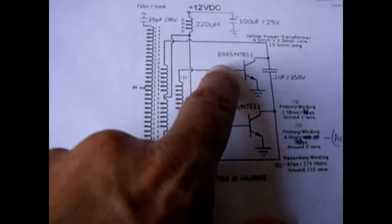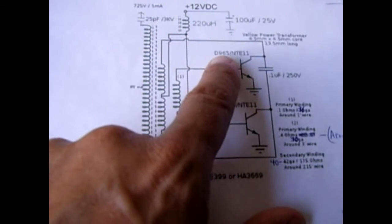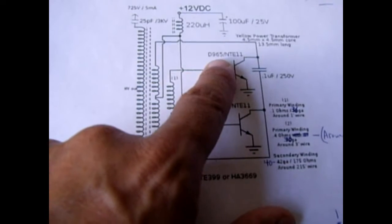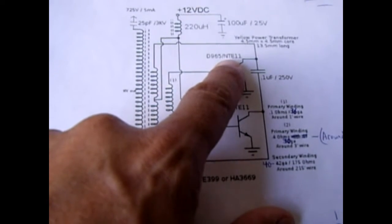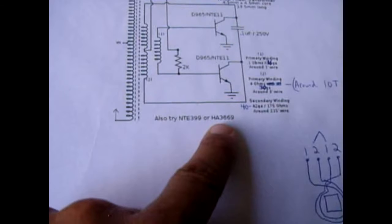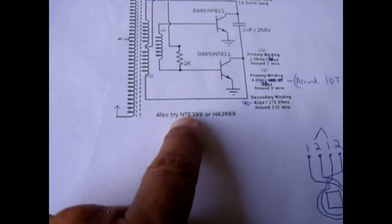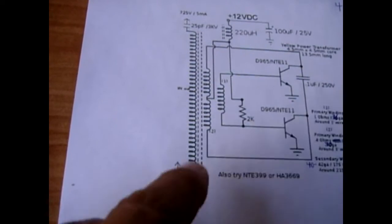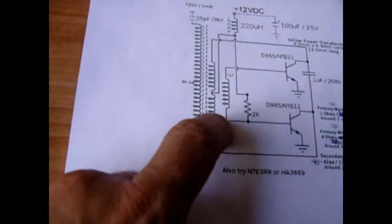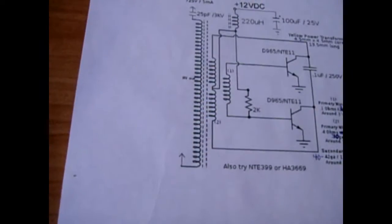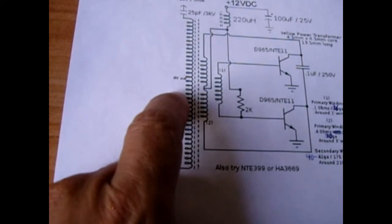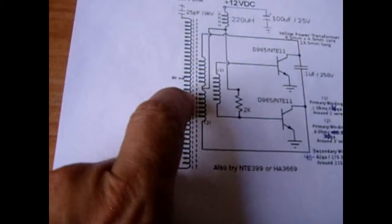Now with this circuit I've had no problem at all using a D965 which is a TO-92 transistor and it's also an NTE 11, but you can also use an HA3669 or an NTE 399. They all work. Just make sure each one of these coils is wound in the same direction. So if you could wind them all clockwise or you can wind them all counterclockwise, but as long as they're all wound the same way.